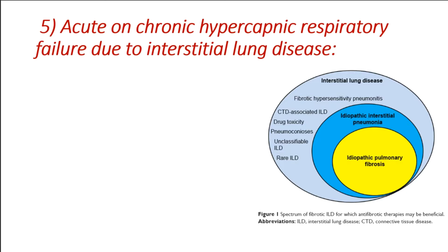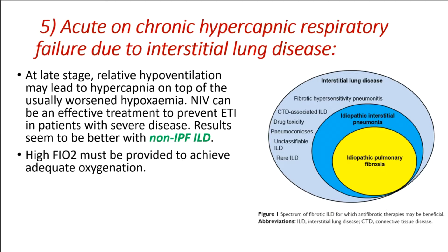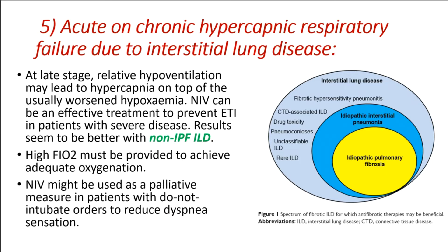Acute on chronic hypercapnic respiratory failure due to interstitial lung disease: At late stage, relative hypoventilation may lead to hypercapnia on top of the usually worsened hypoxemia. NIV can be an effective treatment to prevent ETI in patients with severe disease, with results seeming to be better with non-IPF ILD. High FiO2 must be provided to achieve adequate oxygenation. NIV might be used as a palliative measure in patients with do-not-intubate orders to reduce dyspnea sensation.